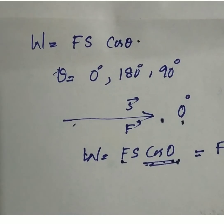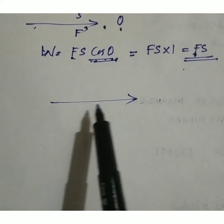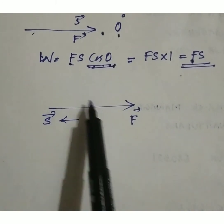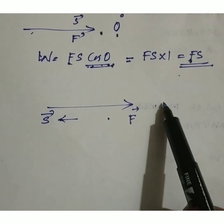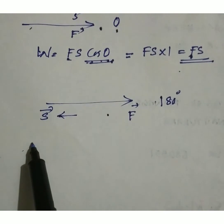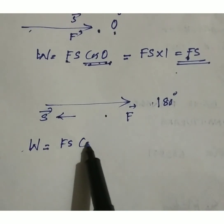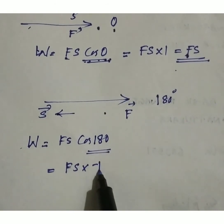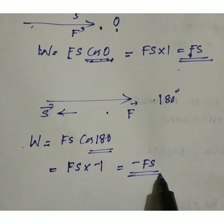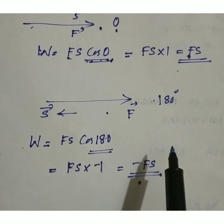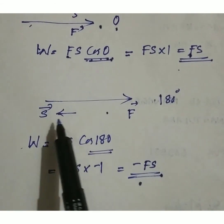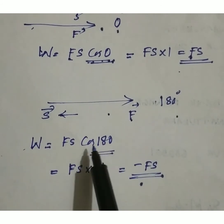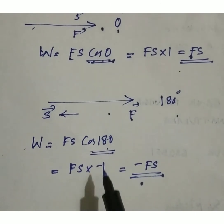If force is acting in the forward direction and displacement is in the opposite direction, the angle between force and displacement is 180 degrees. So W equals Fs cos 180. Since cos 180 equals negative 1, we get W equals negative Fs — so work done is negative. When force and displacement are in the opposite direction, the angle is 180 degrees.